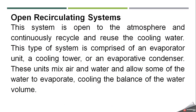The third type is the open recirculating system, which is open to the atmosphere and continuously recycles and reuses the cooling water. Although it recirculates, one end is open to the atmosphere where it rejects heat. This type of system comprises an evaporator unit, a cooling tower, or an evaporative condenser. These units mix air and water and allow some of the water to evaporate, cooling the balance of the water volume because evaporation causes a drop in temperature.